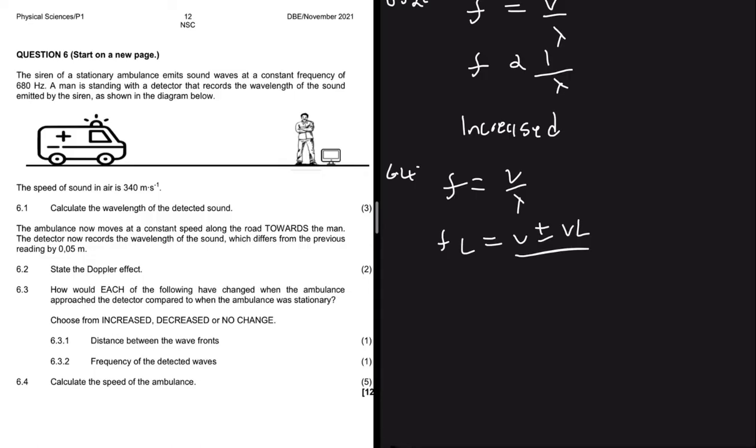Question 6.4 says: calculate the speed of the ambulance. In the Doppler effect there are a few formulas you can use. One is frequency equals speed divided by wavelength. Another is: frequency of the listener equals v plus or minus the velocity of the listener, divided by v plus or minus the velocity of the source, multiplied by the frequency emitted by the source. Since this question asks for the speed of the ambulance, the second formula is what we'll use.